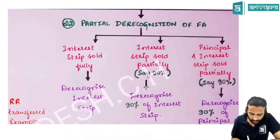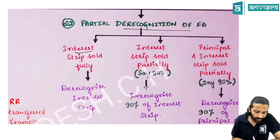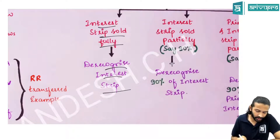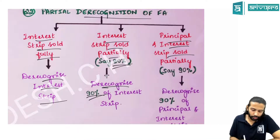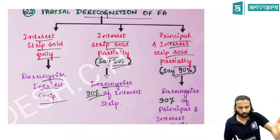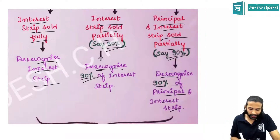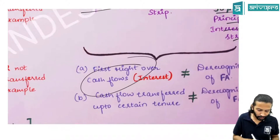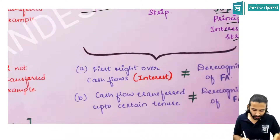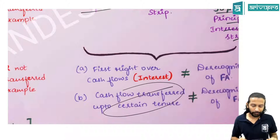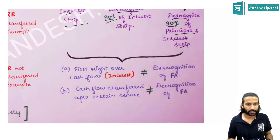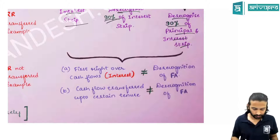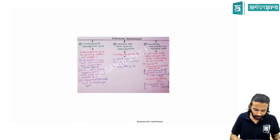Partial derecognition is allowed. Example: if only the interest strip is sold fully, derecognize only the interest strip. If 90% of the interest strip is sold, derecognize only 90%. If 90% of both principal and interest strip are sold, derecognize 90% of both. However, if only the first right to cash flows is transferred, or cash flows are transferred only up to a certain tenure, it is not a derecognition.